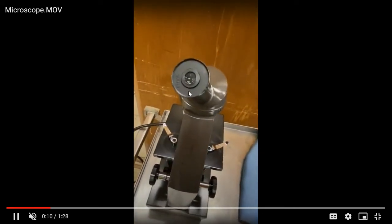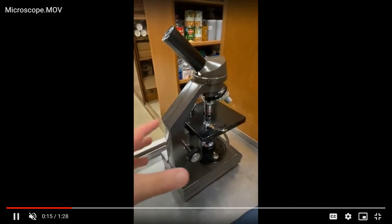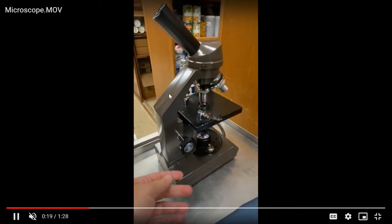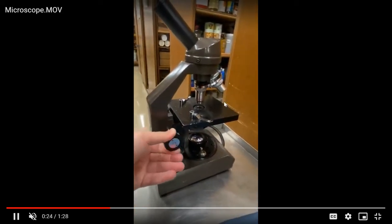Over here is what we call the arm of the microscope. That's what you'll hold onto while you're transporting it. Here is our course adjustment. You can see it moves what we call the stage up and down in order to get things into view.